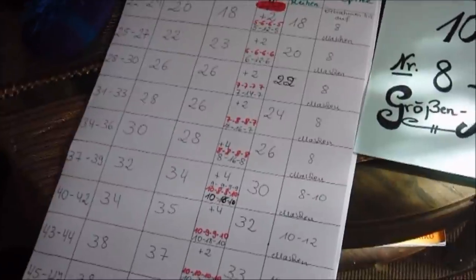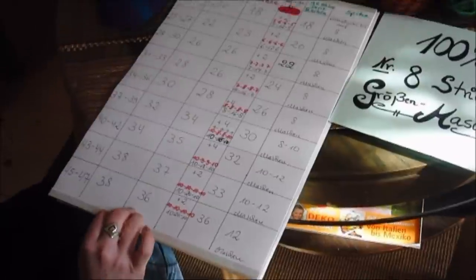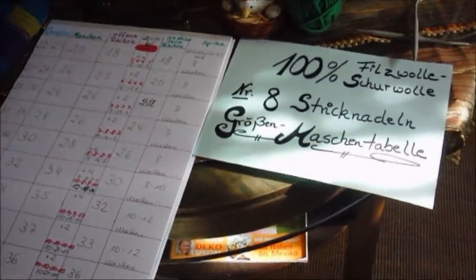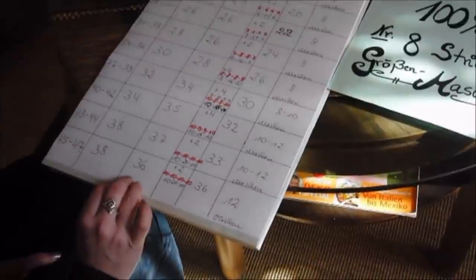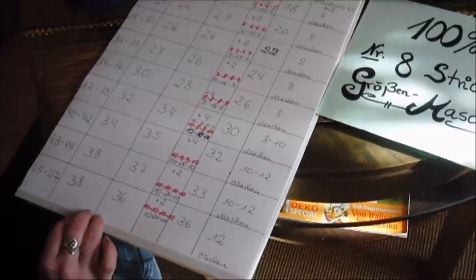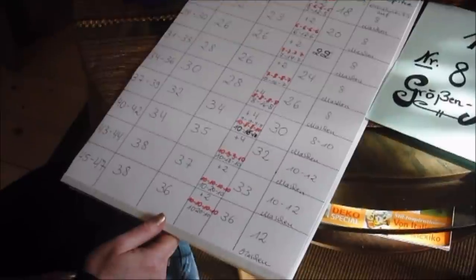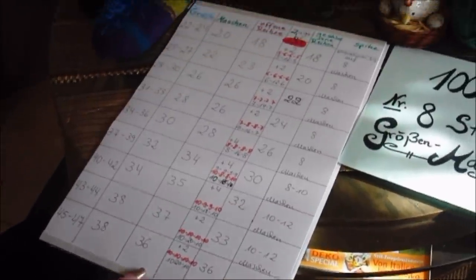Wichtig ist: wenn ihr fertig seid, wascht den Hausschuh einmal bei 40 Grad ohne Weichspüler, mit Flüssigwaschmittel auf pflegeleicht. Dann zieht ihr ihn feucht an und auf die Größe die ihr braucht.